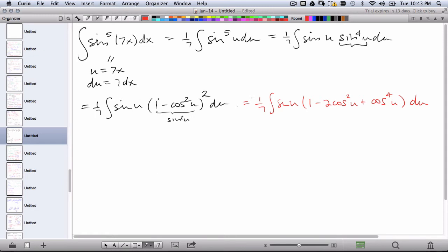Now that you've expanded this binomial, you'll notice that each of these terms, once you distribute the sine, the sine can be rewritten as a u to the n du problem, or maybe more specifically, a w to the n du problem, because here we've already got u.